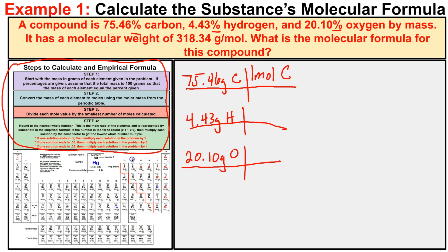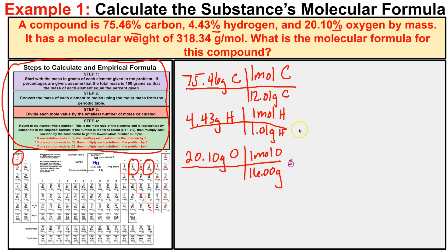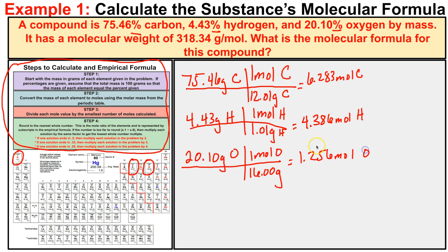One mole of carbon is 12.01 grams, one mole of hydrogen is 1.01 grams, and one mole of oxygen is 16.00 grams. Putting these into our calculator, we end up with 6.283 moles of carbon, 4.386 moles of hydrogen, and 1.256 moles of oxygen. That completes step two — we've converted the grams to moles.